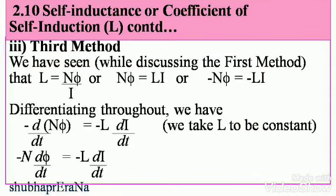Now, let's proceed to the third method. From the first method, L = Nφ/I, so Nφ = LI. Multiplying throughout by a negative sign, −Nφ = −LI. Differentiating throughout, we have −d(Nφ)/dt = −L × dI/dt, taking L to be a constant. This gives −N × dφ/dt = −L × dI/dt.